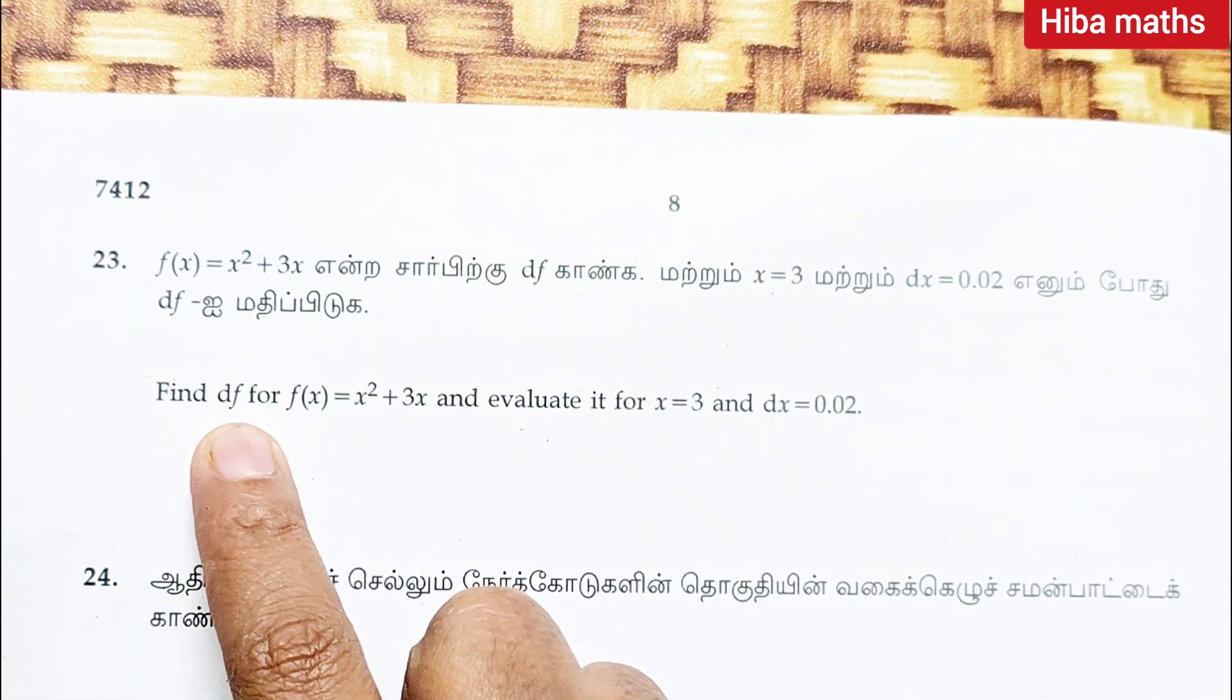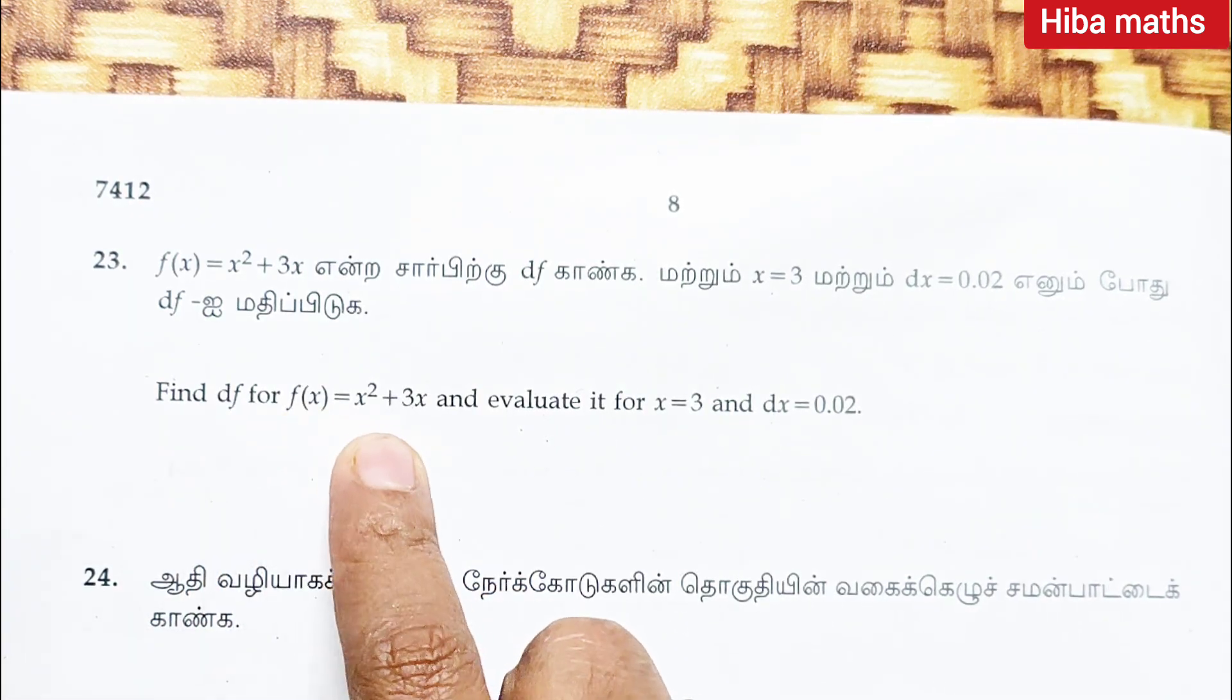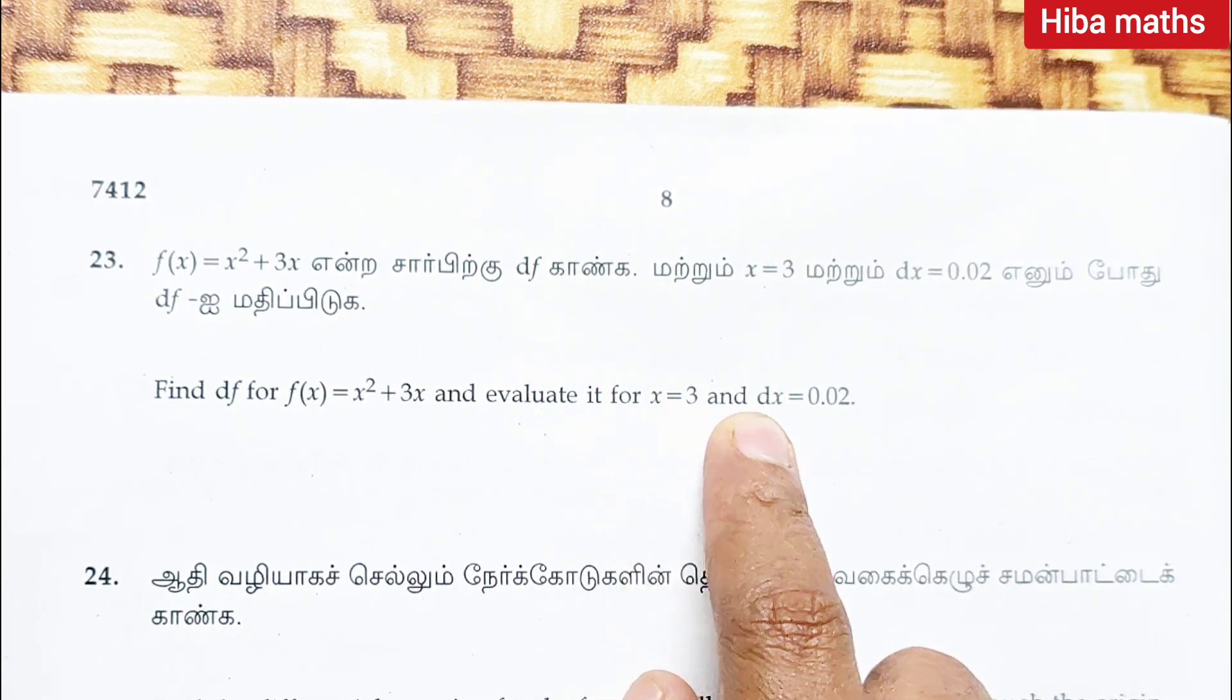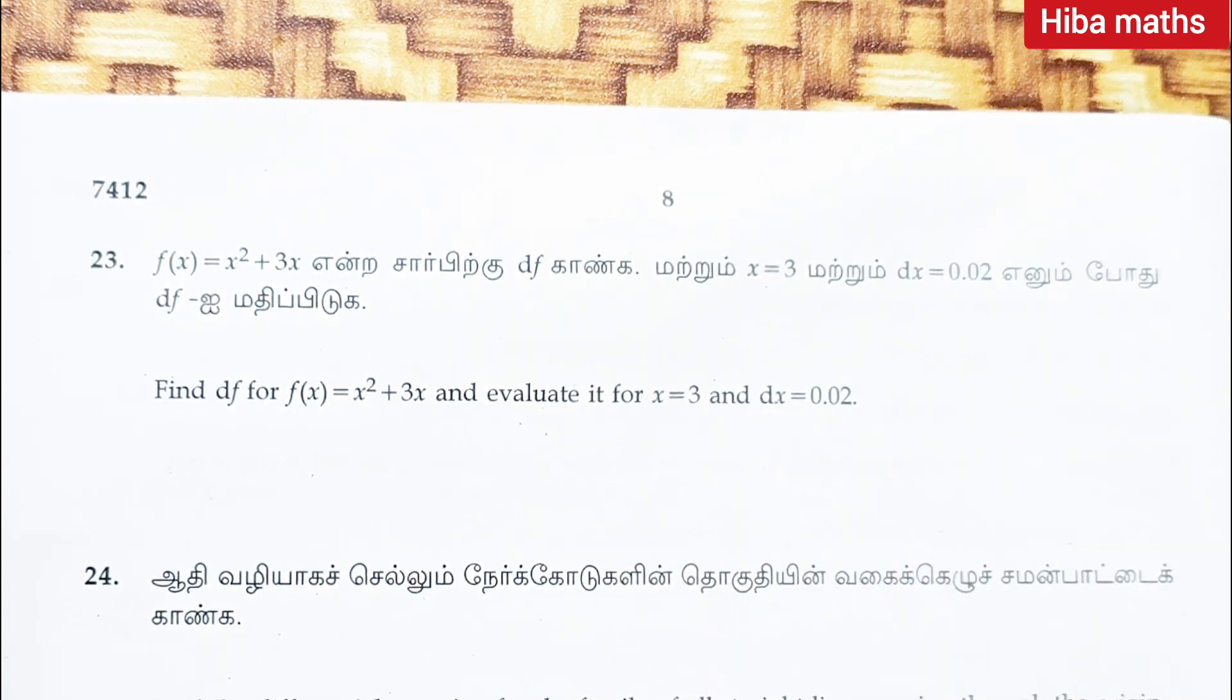Find df for f of x is equal to x square plus 3x and evaluate it for x equal to 3 and dx is equal to 0.02.